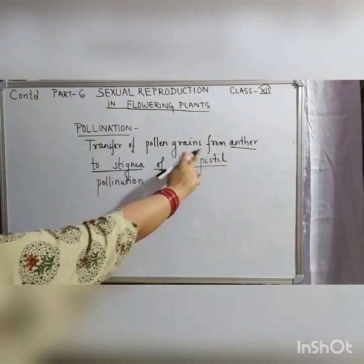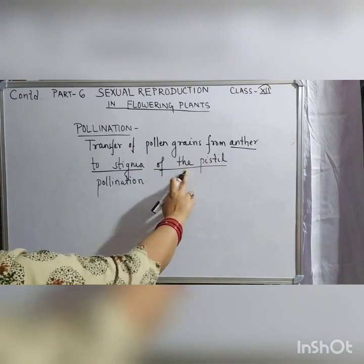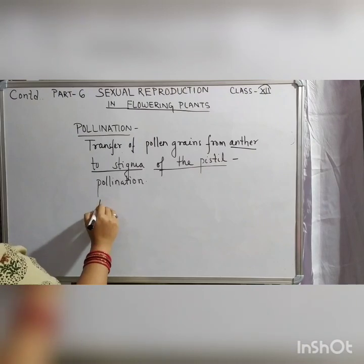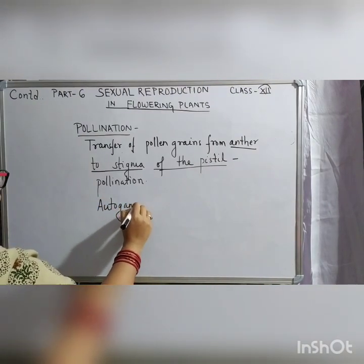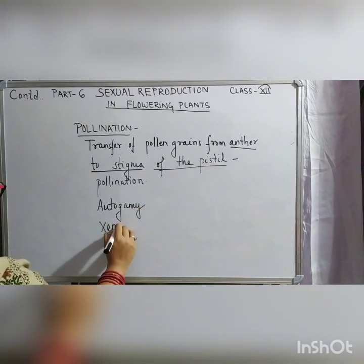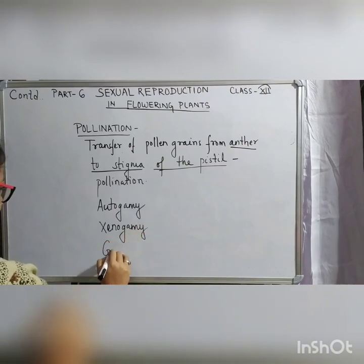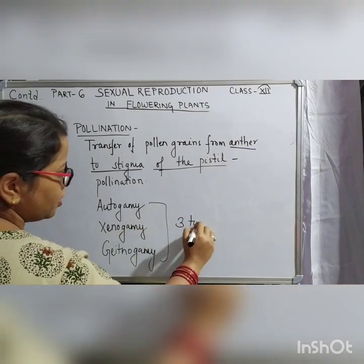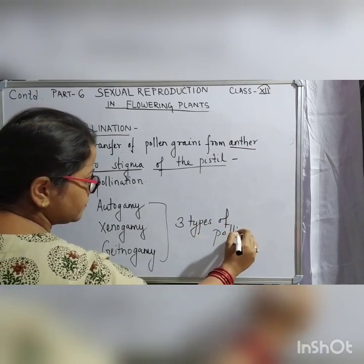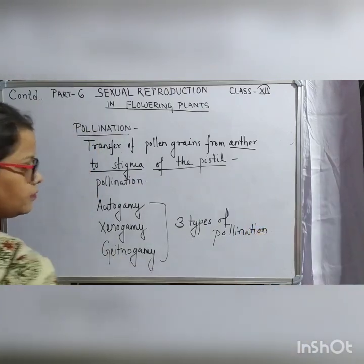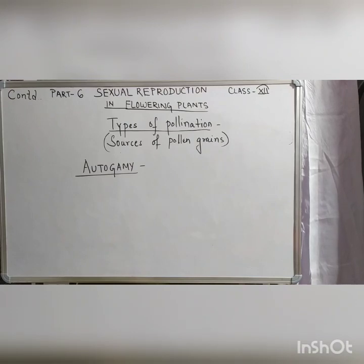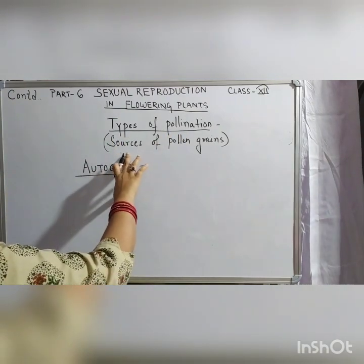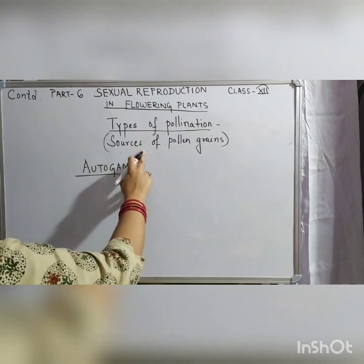Transfer of pollen grains from anther to stigma of the pistil is called pollination. There are three types of pollination in your course: autogamy, geitonogamy, and xenogamy. We are defining these three types according to the sources of pollen grains — that means from where the pollen grains arrive.